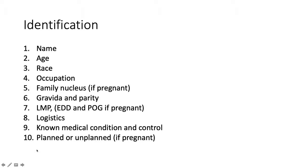Now we will go through it one by one, starting with identification. Dr. Hassan, our professor, has taught us 10 points for identification: name, age, race, occupation, and family nucleus — whoever is staying with the patient in the same house — to gauge the amount of support she has. This involves drawing out a family tree of whoever is in the same house and how many kids she has.